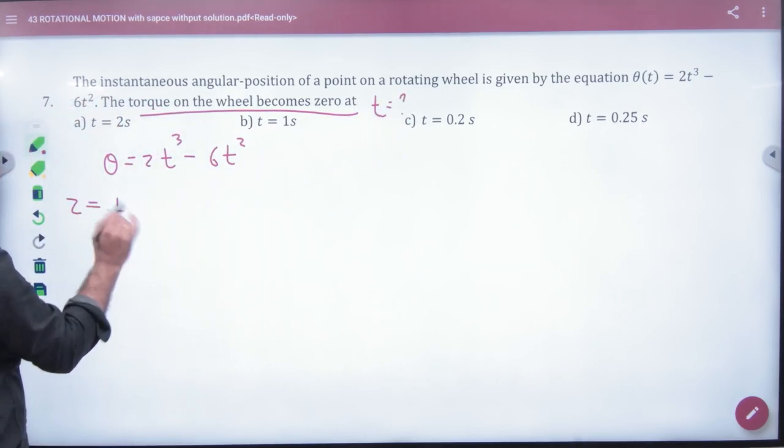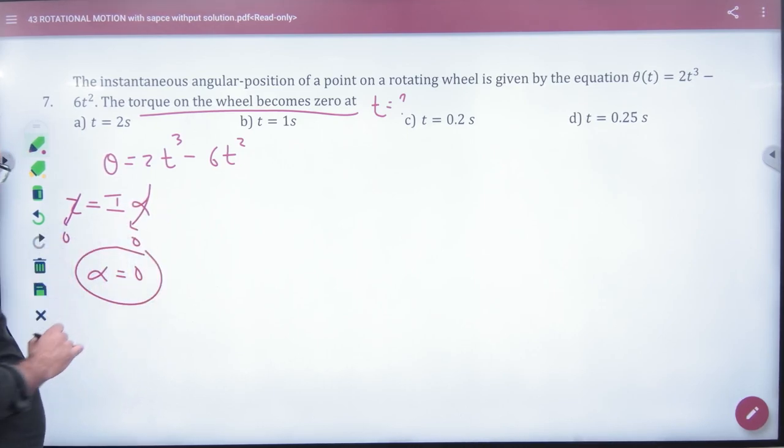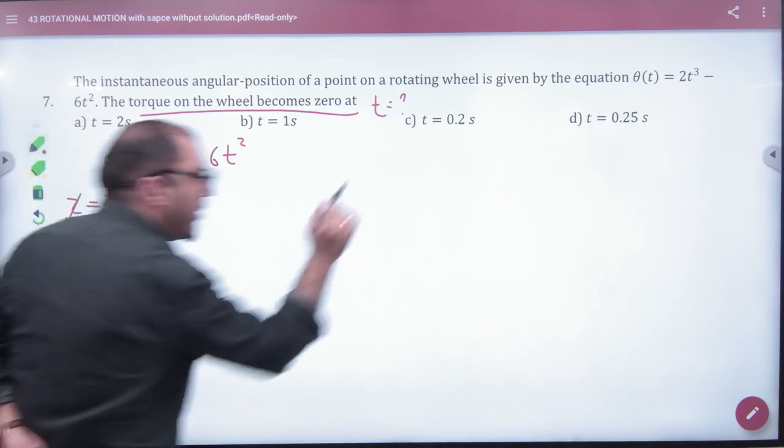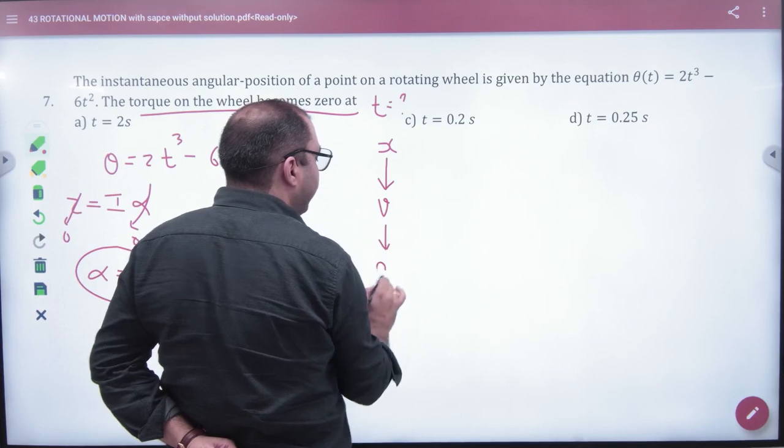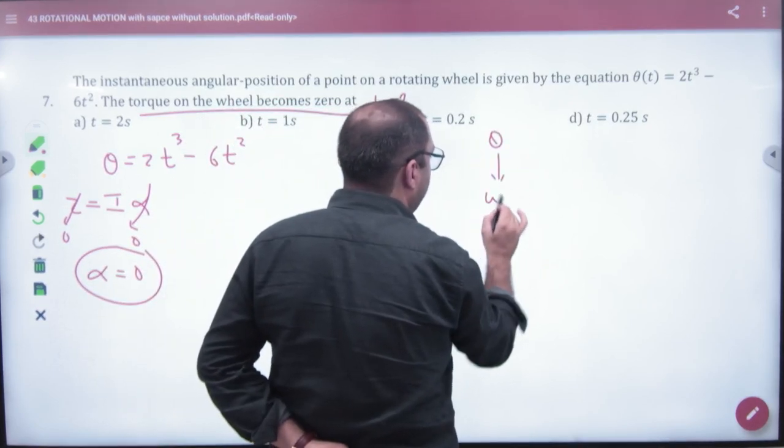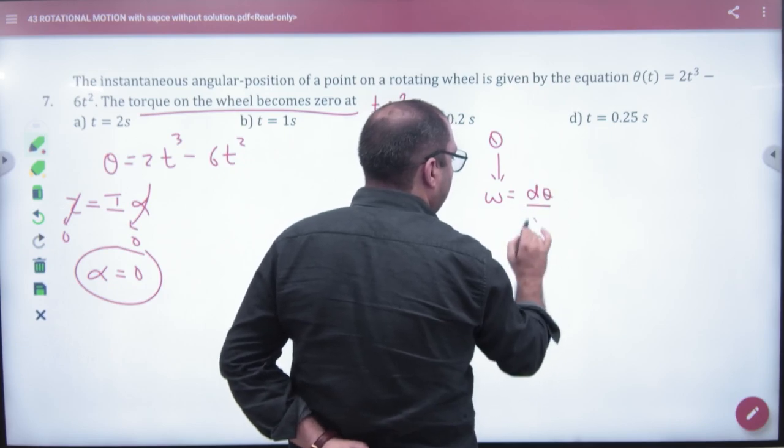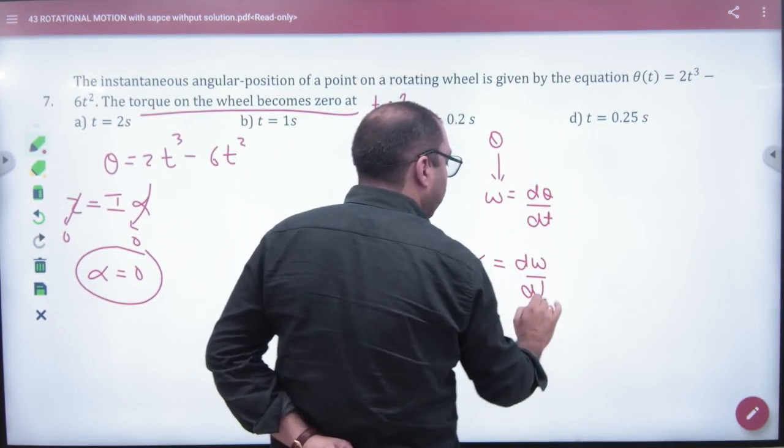Torque is I times alpha. I will not be zero. If I want torque zero, then what should also be zero? Alpha should be zero. Now how will we get alpha from theta? We differentiate it twice. Theta gives omega, omega gives alpha.